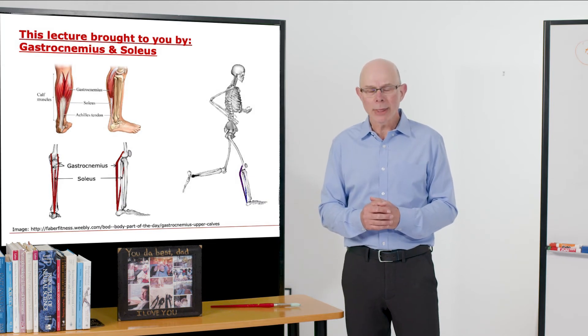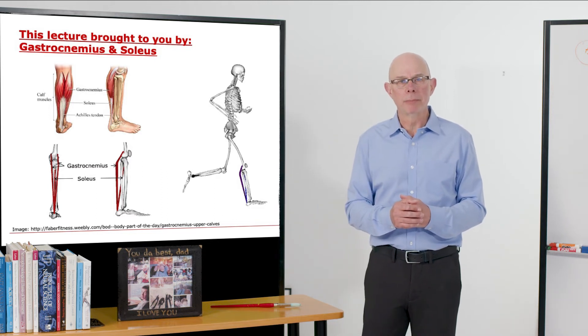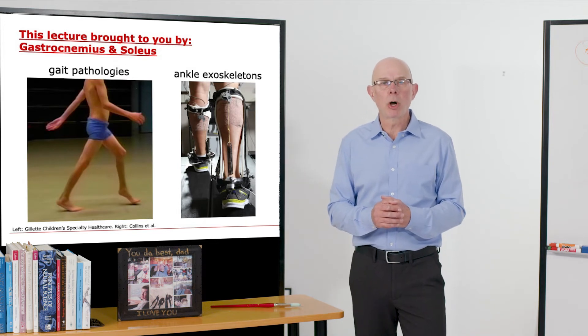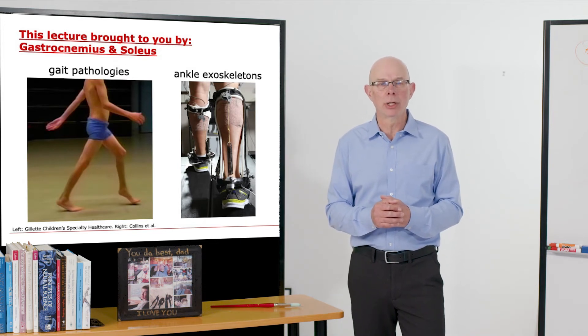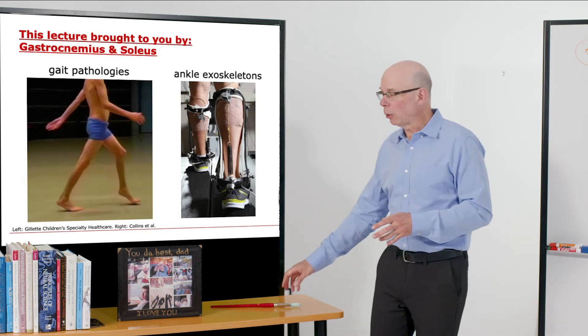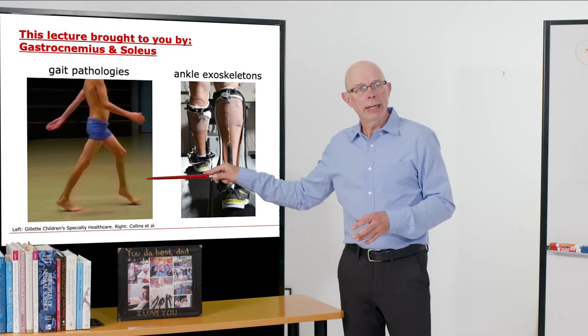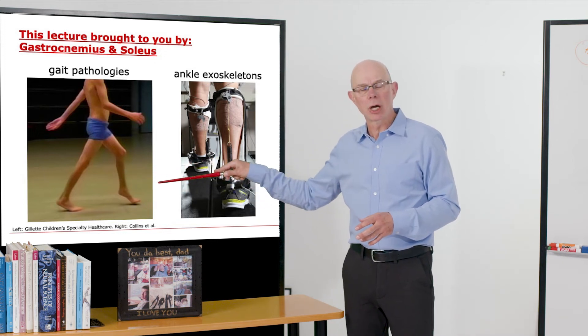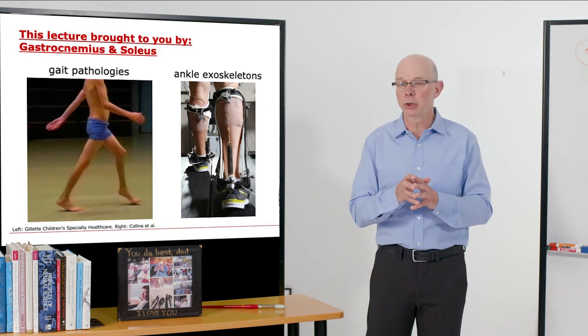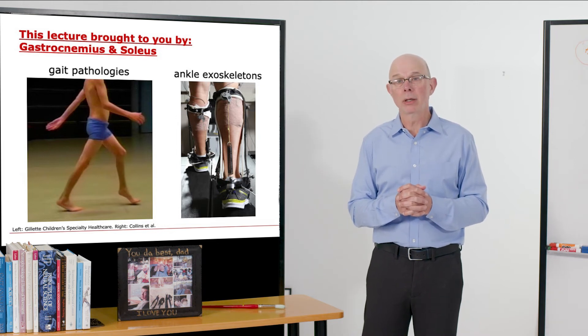When things go wrong, there can be trouble. Here's a picture of a young man with cerebral palsy who has a gait pathology called equinus gait because he's walking up on his toe. Normally we contact the foot with the heel, but here his foot is contacting toe first. That's likely because his gastrocnemius is either too tight or overactive, so he's a candidate for a lengthening surgery to relax the excessive tension in his gastrocnemius.